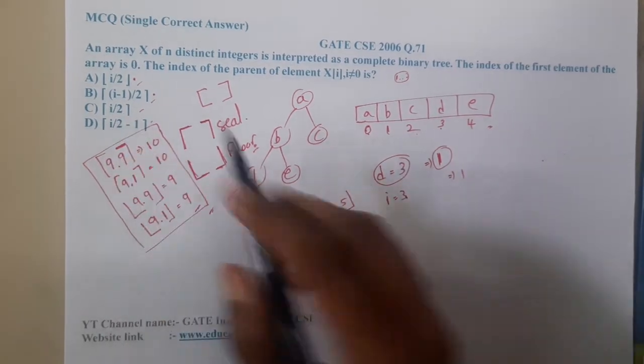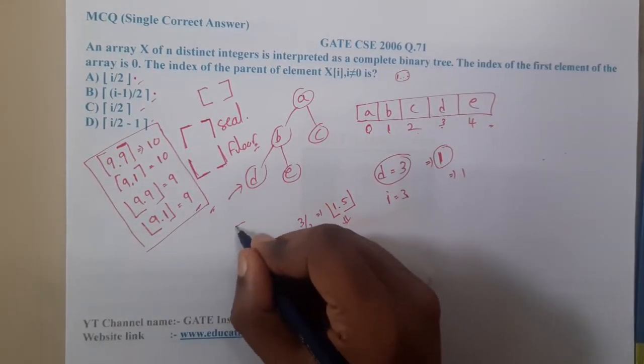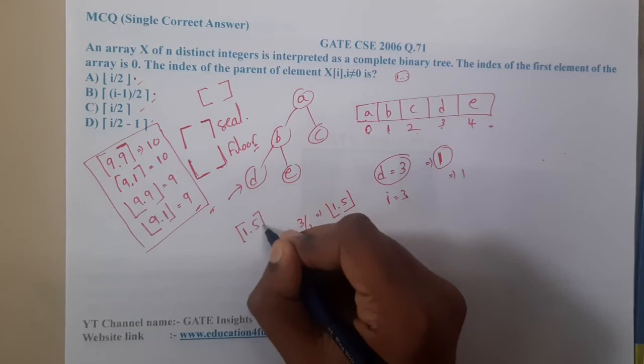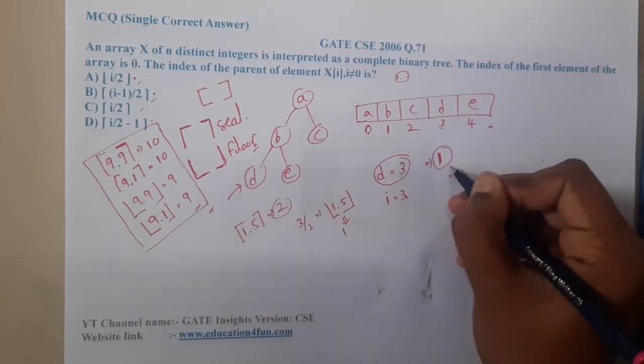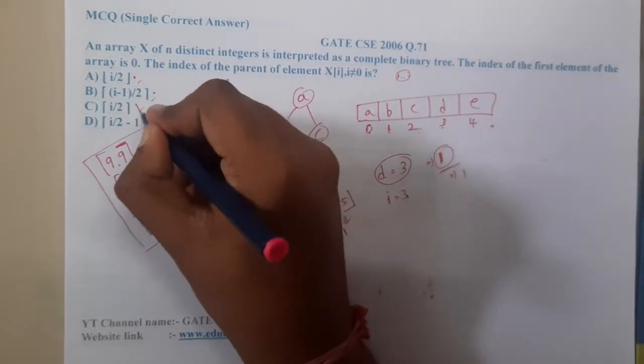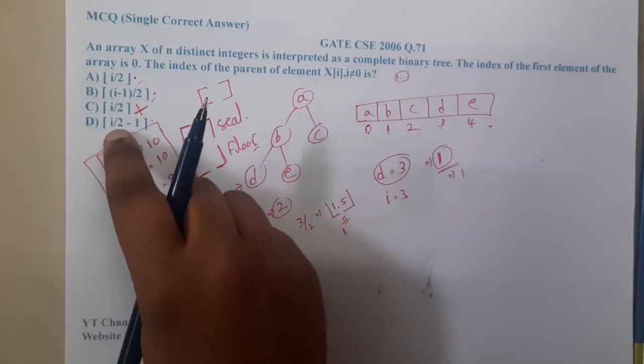Moving on to option C, it is 1 by 2 with the upper value. If it is upper value, if it return 1.2 it will say 2, but our required answer is 1. Hence option C is wrong.